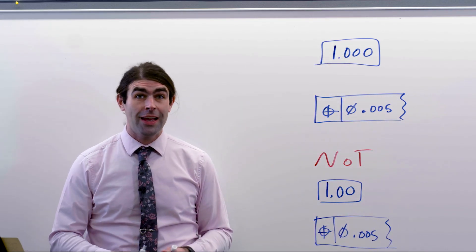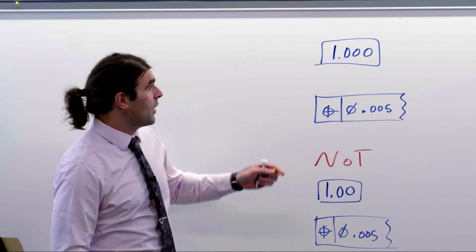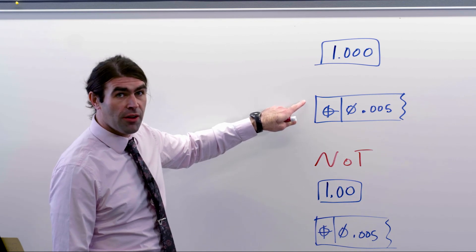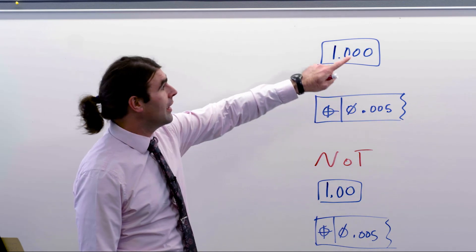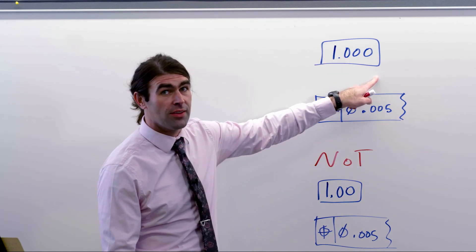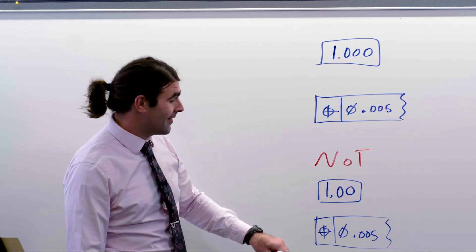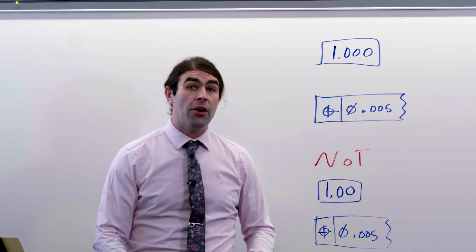This is essentially what the examples look like in the 1994 standard. When you have a basic dimension, and it's associated with a feature control frame with the tolerance of three decimal places, the basic dimension should also have three decimal places, not the basic dimension with two decimal places and the feature control frame tolerance with three decimal places.